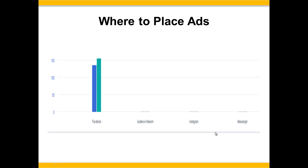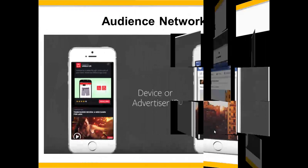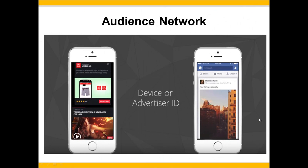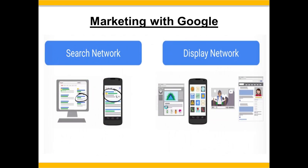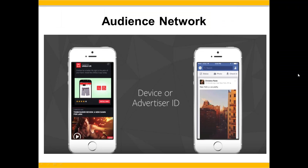When placing ads you can put them on Facebook, add them to the audience network, or use Instagram and Messenger. The audience network means that ads showing up on your screen are based on what you've looked at before — somebody is reselling that information back to businesses to push ads to them. This can be done on any digital device, and that person can be tracked and ads sent to them either by their advertiser ID or by the device being used.